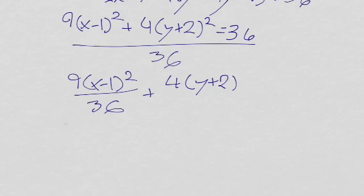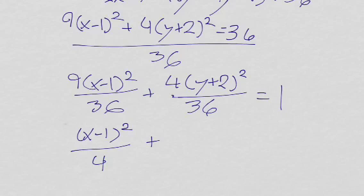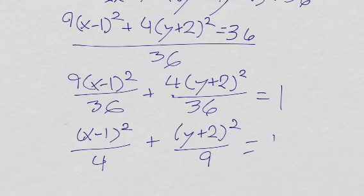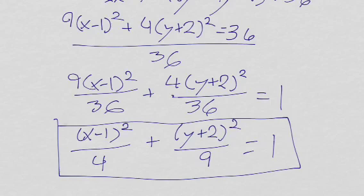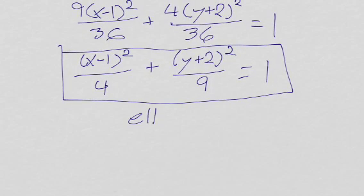Dividing both sides by 36, we get x minus 1 squared over 4, plus y plus 2 squared over 9, equals 1. That's just simplifying those fractions, and that will be equal to 1. We can see that this is definitely one of our conics. I'm going to box this answer — that's our standard form equation — and if we look at our conics sheet, we can see that this is actually the equation for an ellipse.